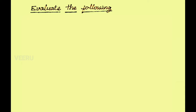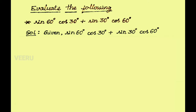See the first problem: sin 60 degree into cos 30 degree plus sin 30 degree into cos 60 degree. In the solution, write the given as it is: sin 60 degree into cos 30 degree plus sin 30 degree into cos 60 degree.